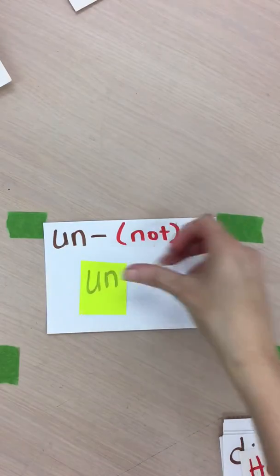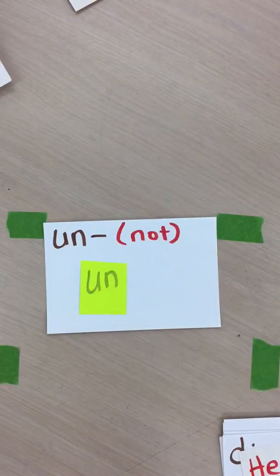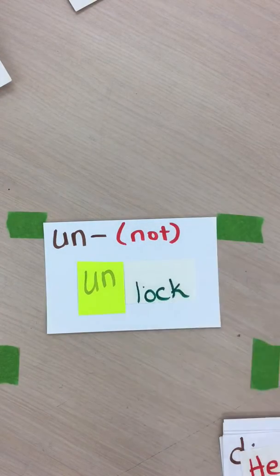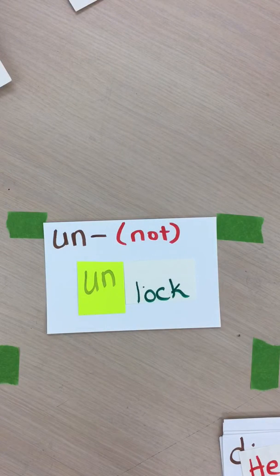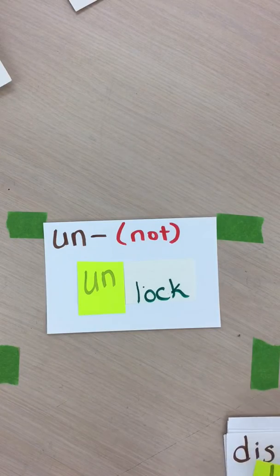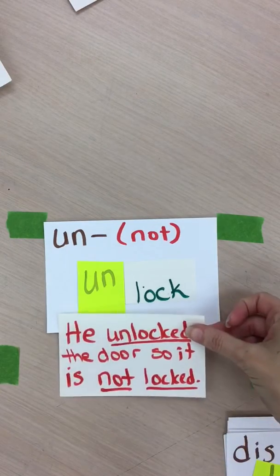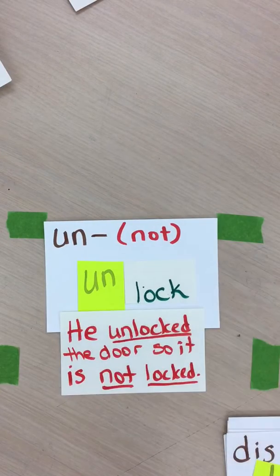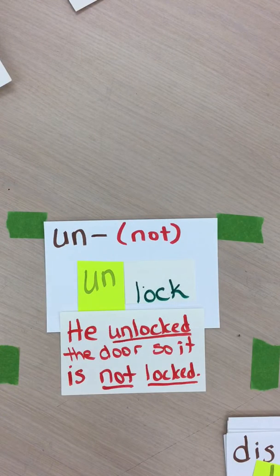Un means not. Let's add un to the word lock — we have the word unlock. What do you think unlock means? If he unlocked the door, it is not locked.